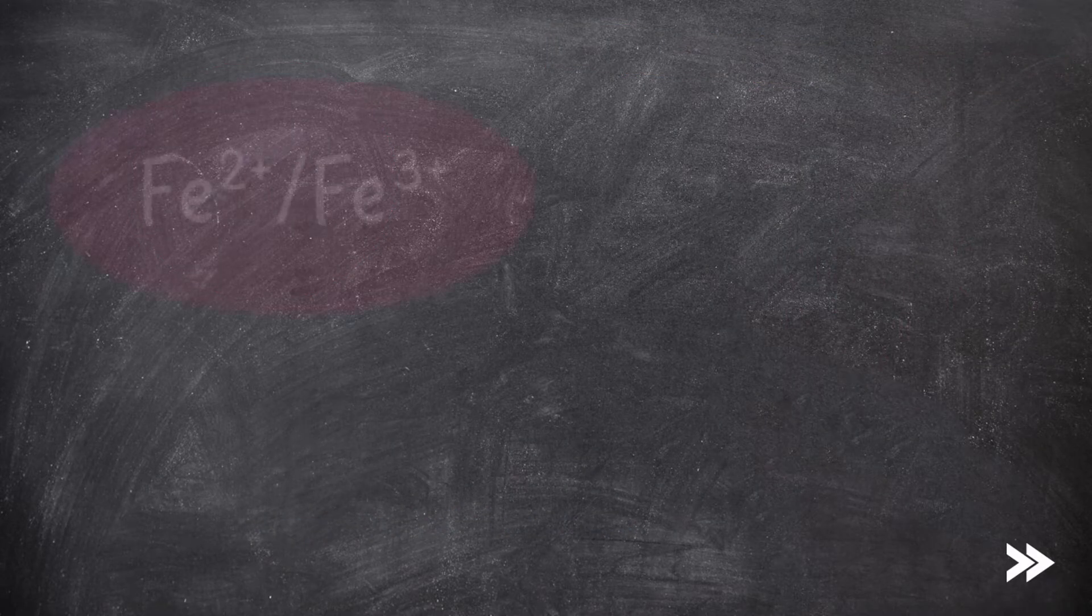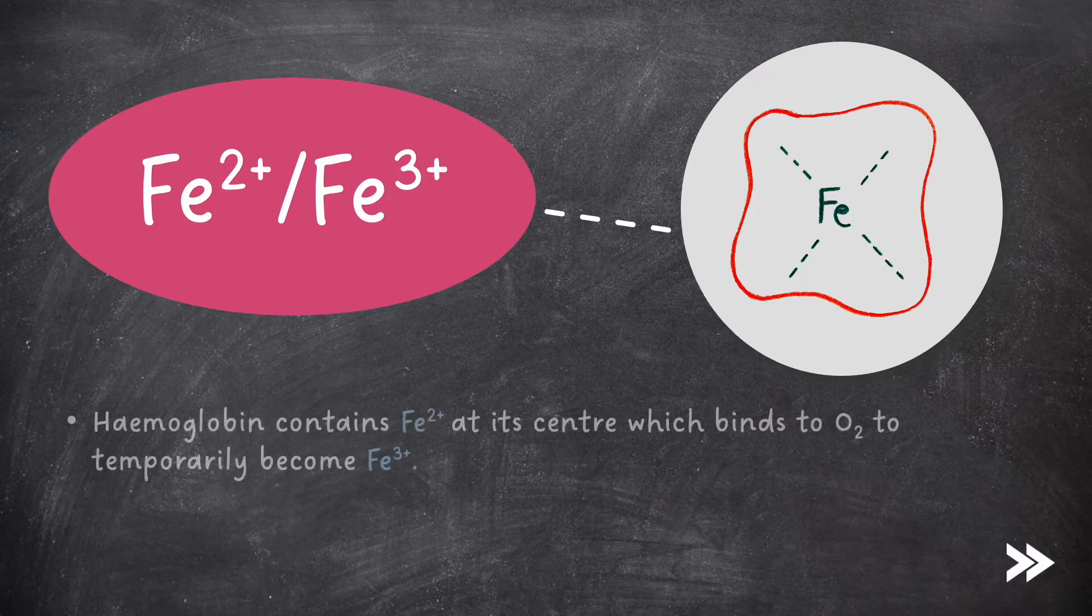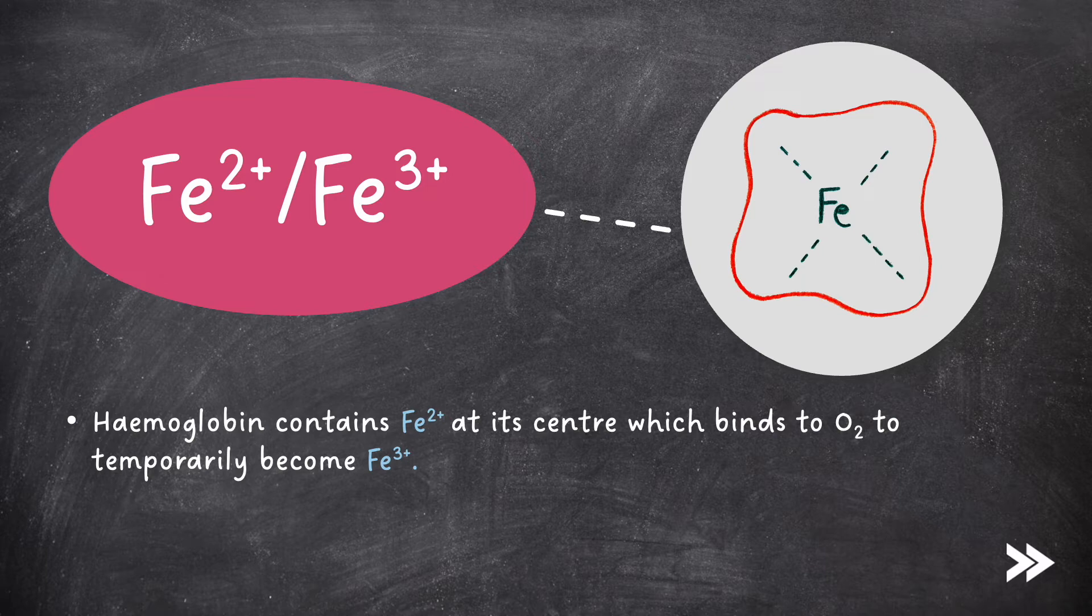Next, we have iron ions, specifically those in Fe2+ and Fe3+ forms. Hemoglobin in red blood cells contains Fe2+ at its center, which binds to oxygen to temporarily become Fe3+. This is important in transporting oxygen around the body in the bloodstream.